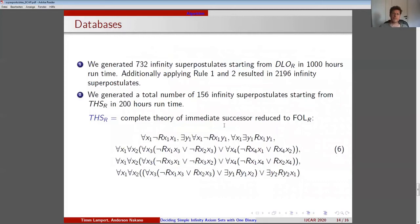We generated 732 infinity superpostulates starting from DLOR in 1000 hours runtime. Additionally applying Rule 1 and 2 resulted in 2196 infinity superpostulates. Furthermore, we generated a total number of 156 infinity superpostulates starting from THSR in 200 hours runtime. THSR is our reduction of the complete theory of immediate successor to FOLR. Thus, so far we generated two systems of infinity superpostulates.